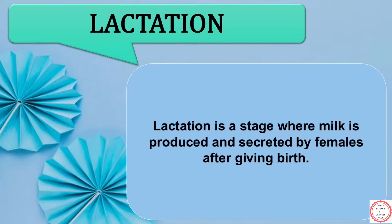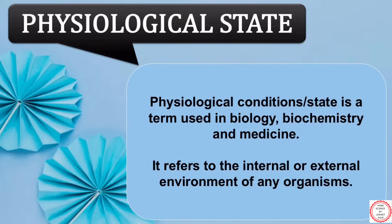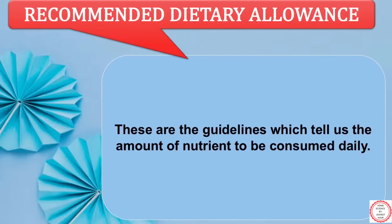Next one is lactation. Lactation is a stage where milk is produced and secreted by females after giving birth. Physiological state or condition is a term used in biology, biochemistry and medicine — it refers to the internal or external environment of any organism. Next one is recommended dietary allowance, also known as RDA. These are the guidelines which tell us the amount of nutrients to be consumed on a daily basis.